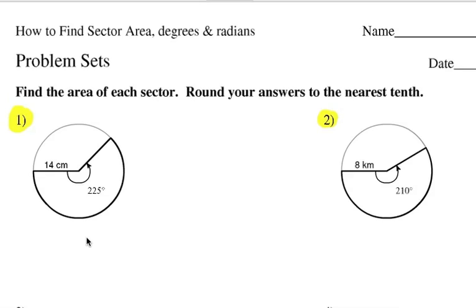I want you to work on numbers 1 and 2. If you think you know how to do it, go ahead and pause. Otherwise, watch me and we'll do it together. So what's the area of the entire circle? Well, it's going to be pi times the radius squared. The radius is 14. Then we're going to multiply it by the central angle, 225, and we're going to divide it by 360.